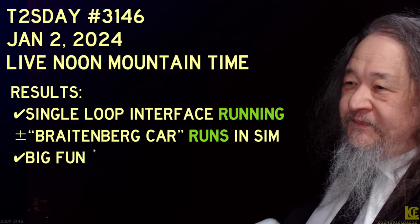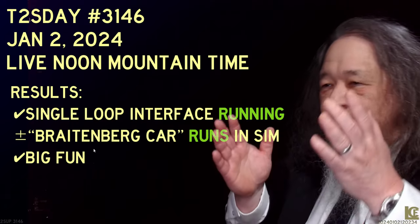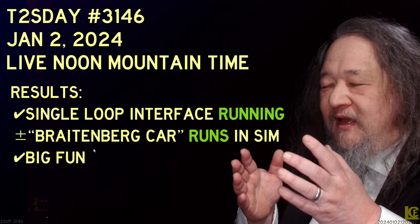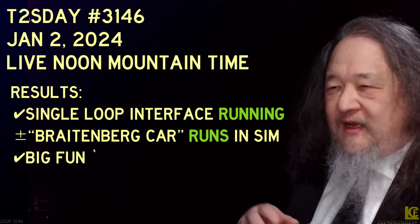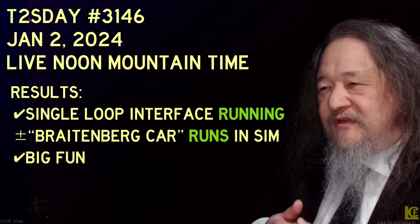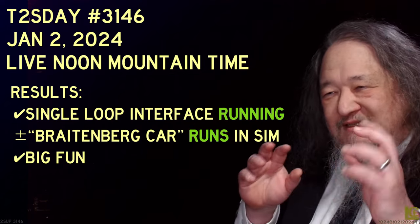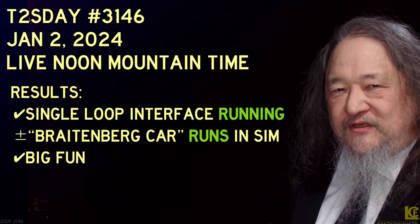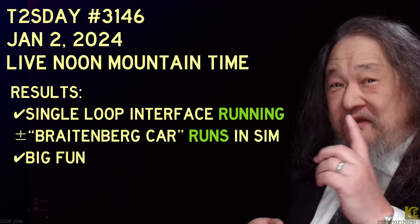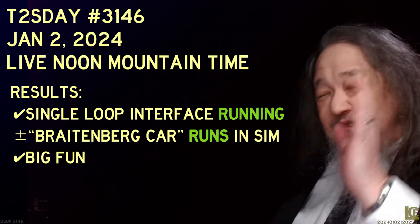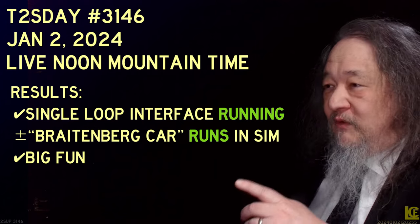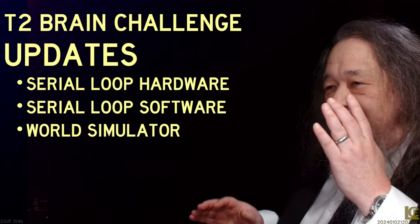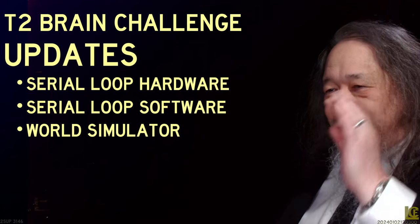The goals for this time were the single loop interface running and the Breitenberg car running. I did pretty well with the single loop interface. The Breitenberg car — the hard part seems to be the wheels and the second part is the light sensor, but I'll talk about it step by step. The serial loop hardware and software is what I want to cover, and then the simulator.